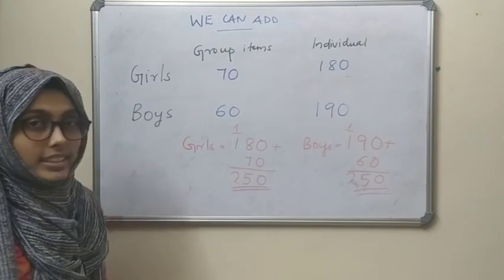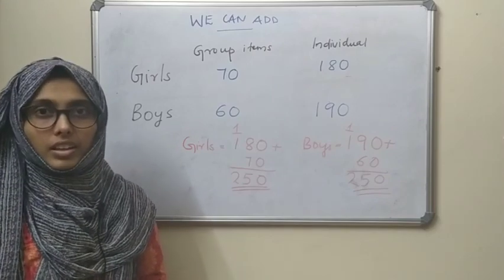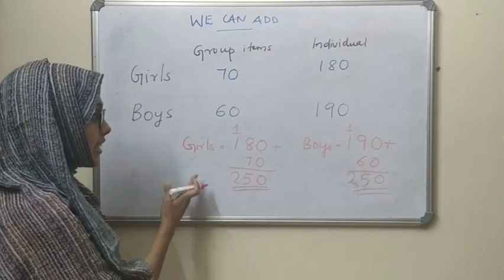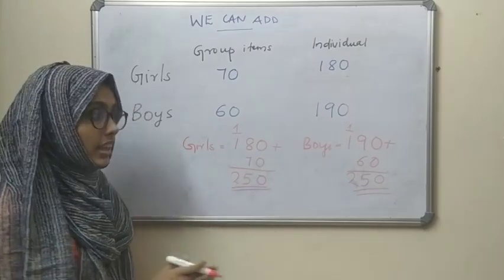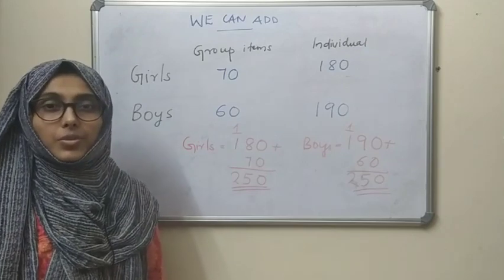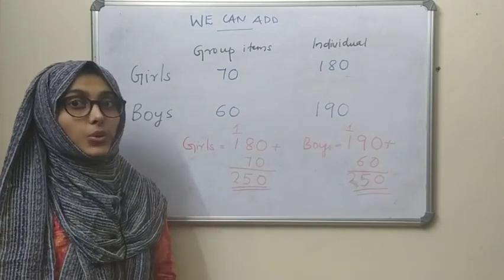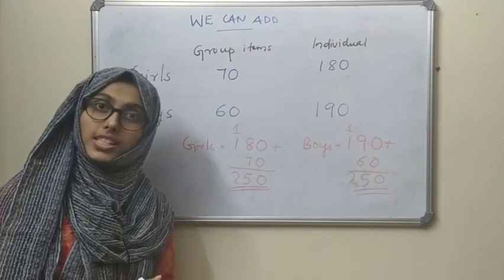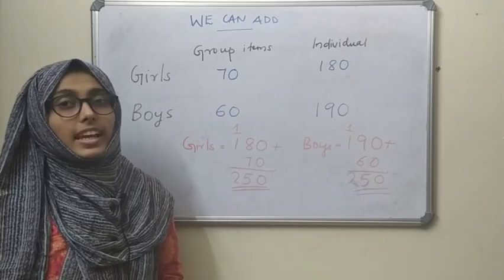Now tell me, who scored more? You can see the points of girls is 250 and the points of boys is also 250. So both are the same — both boys and girls scored the same points.